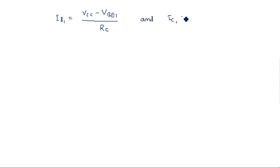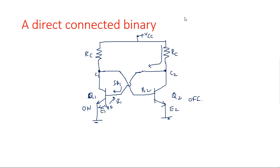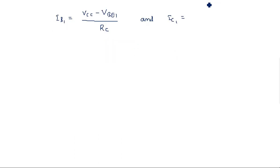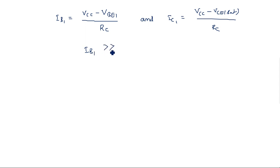IC1 — since Q1 is in the ON state, the voltage across this transistor is VCsat, so IC1 equals VCC minus VCsat divided by RC. We know that IB1 is far greater than IC1 divided by hFE.